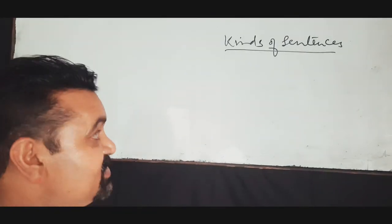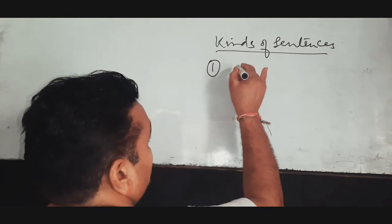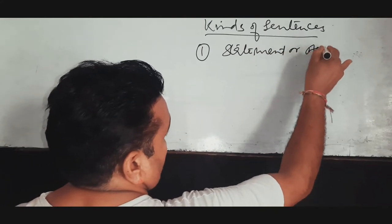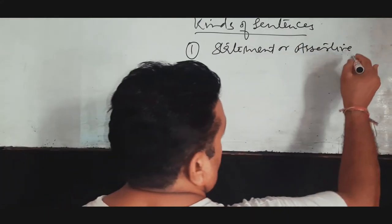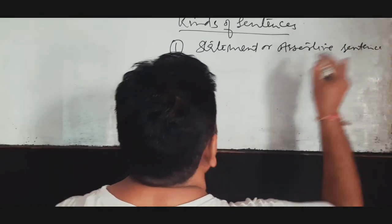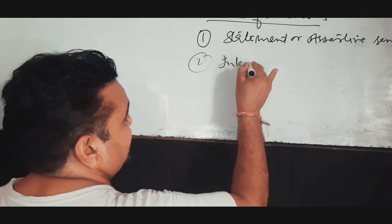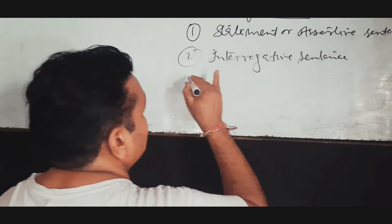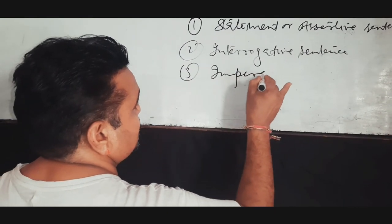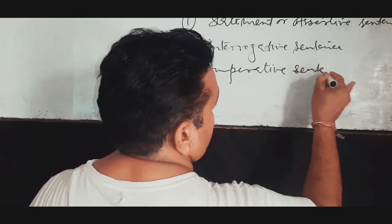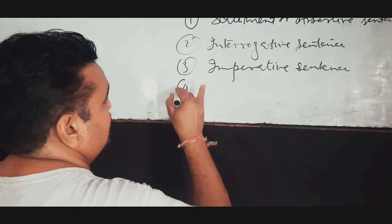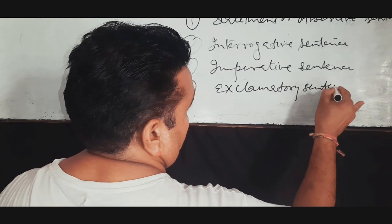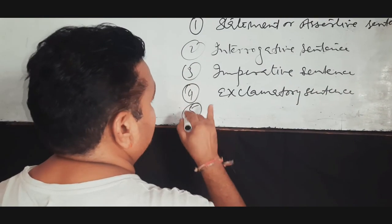There are five kinds of sentences: statement or assertive sentence, interrogative sentence, imperative sentence, exclamatory sentence, and the fifth one is optative sentence.